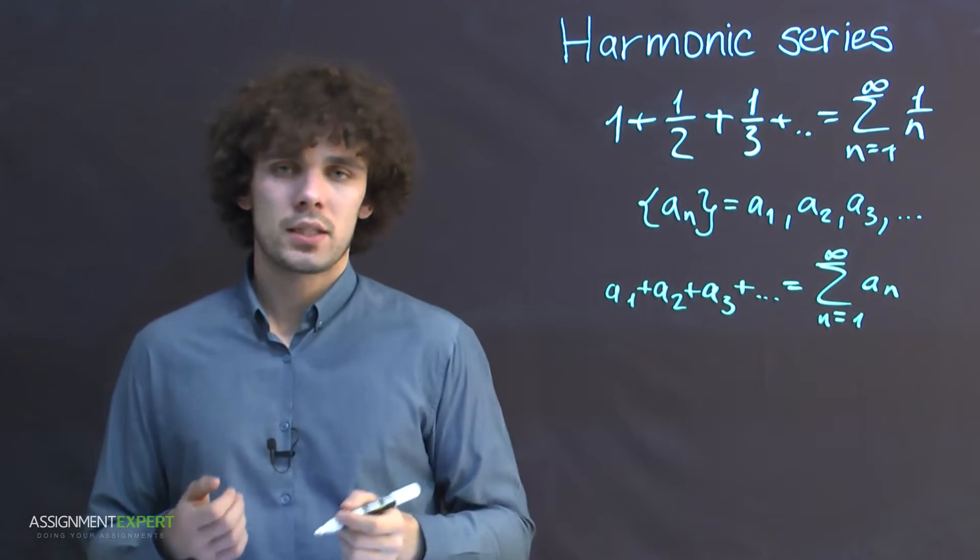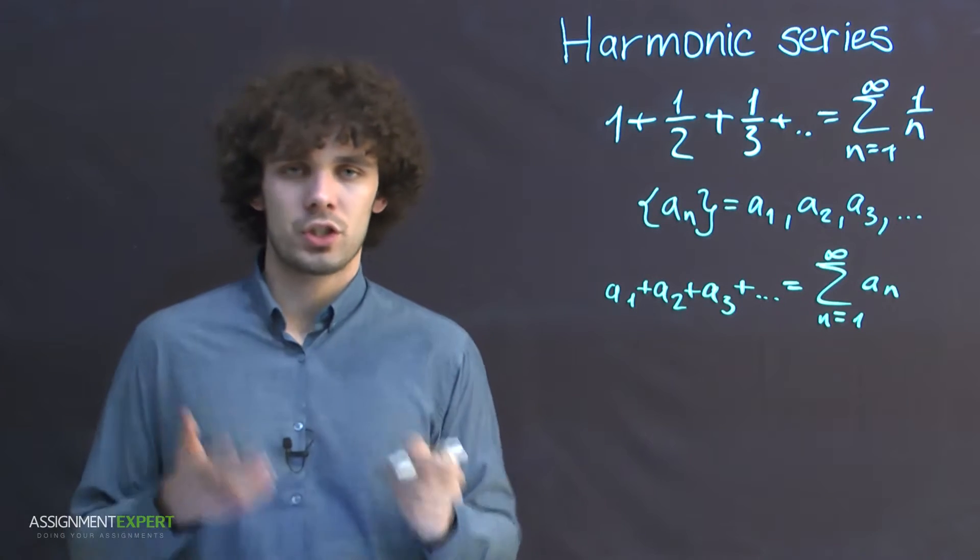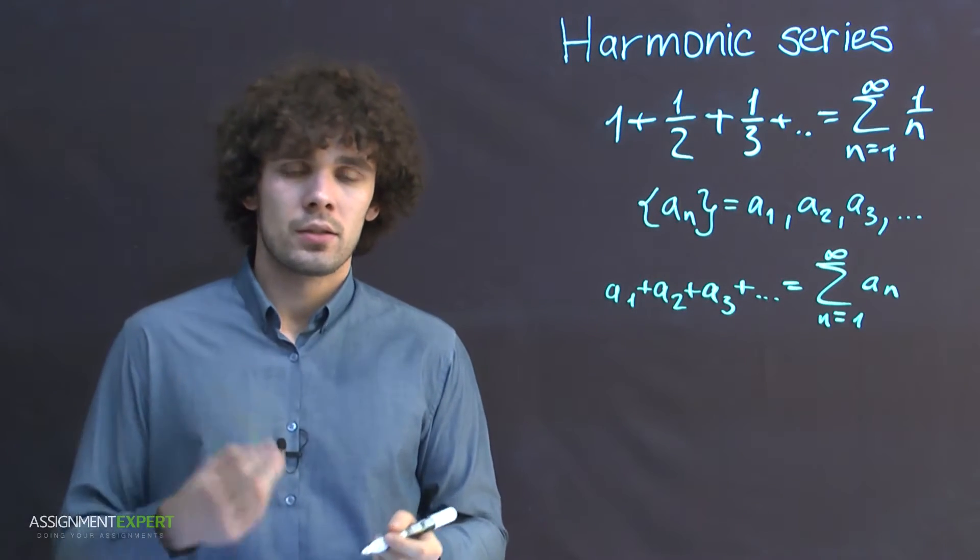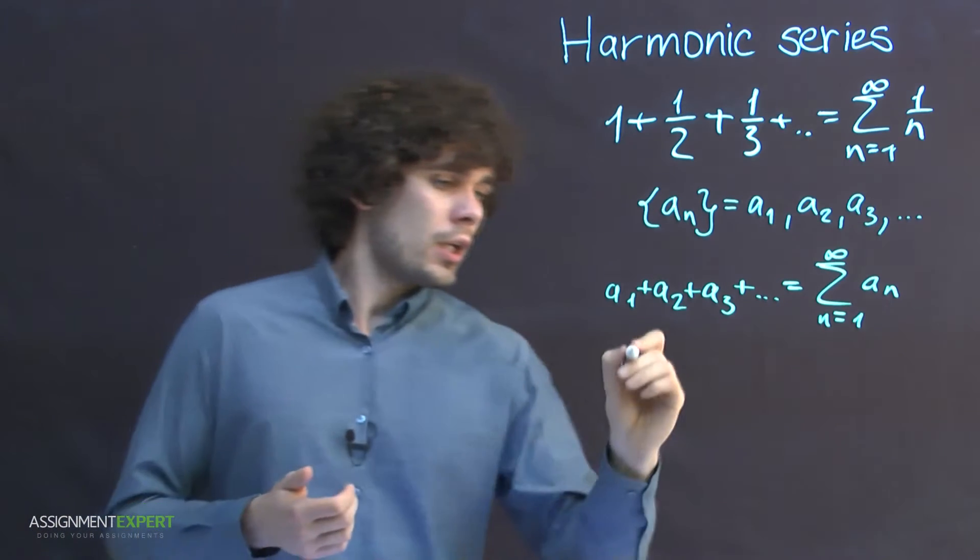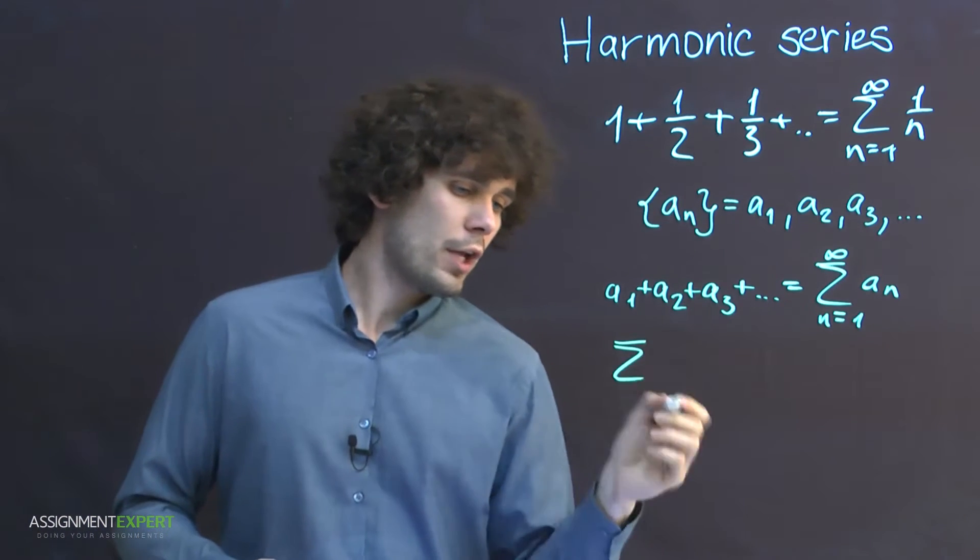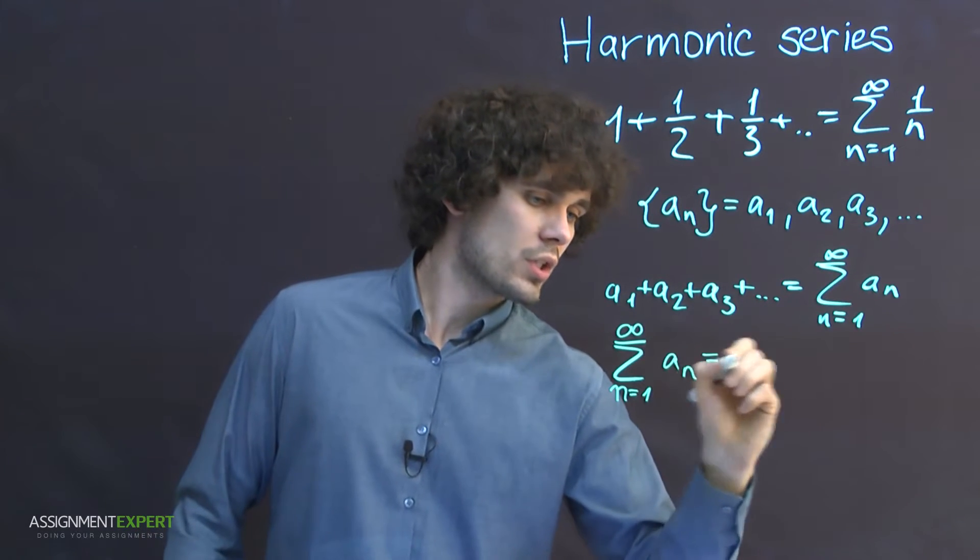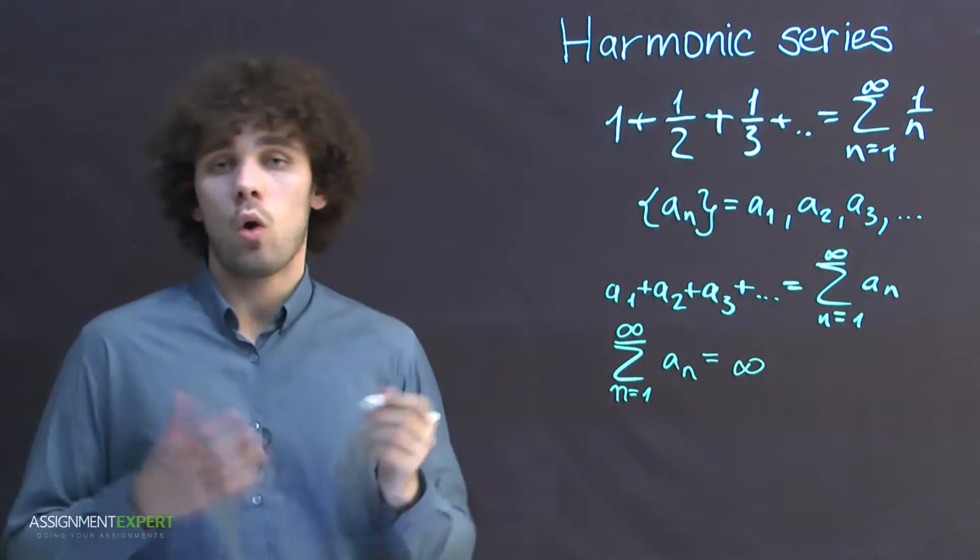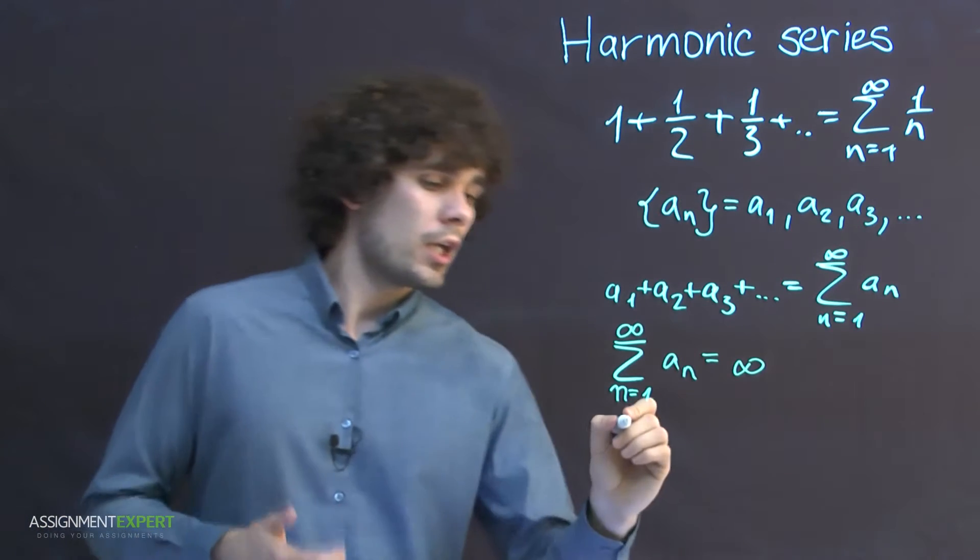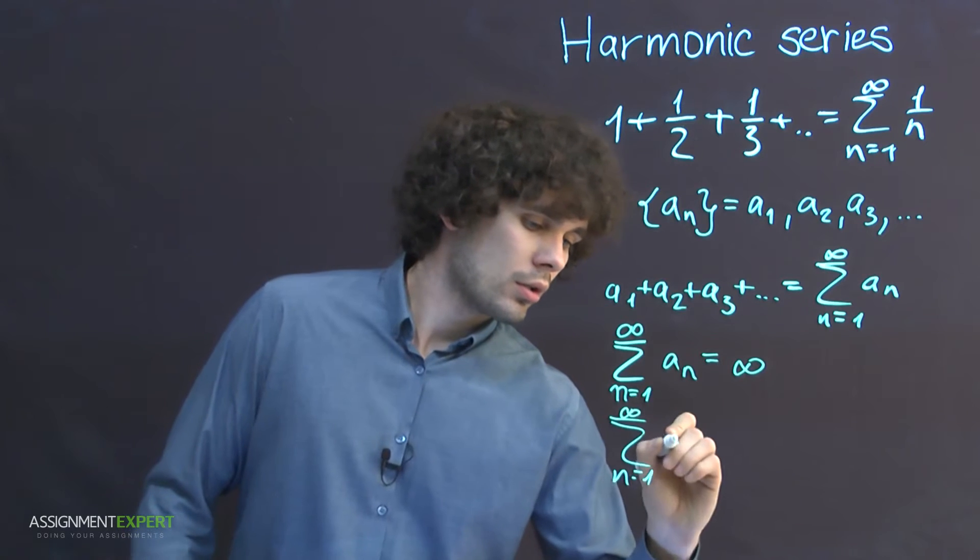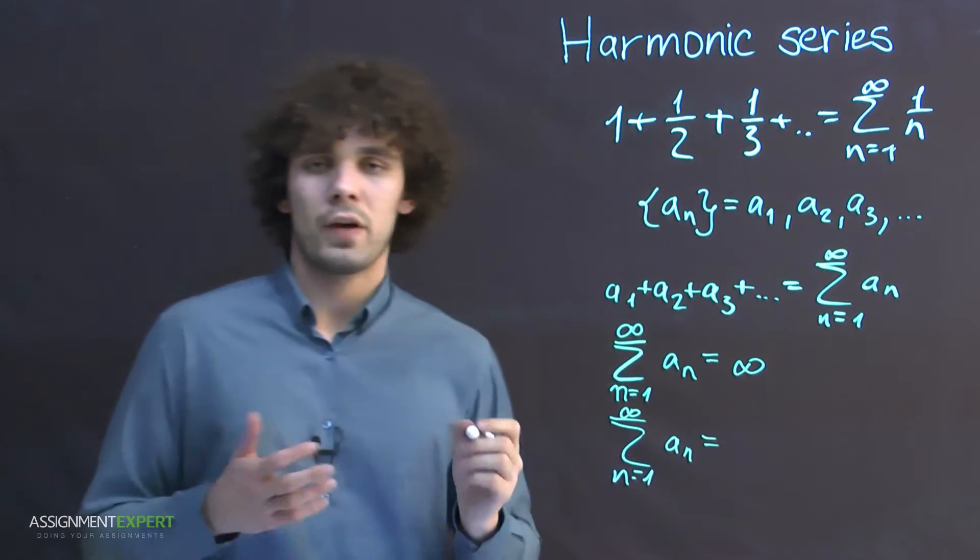One of the key tasks of the theory of numerical series is to reach convergence. There are two possible cases. The series diverges if the sum of infinite amount of terms equals infinity. Or the series converges if the sum of the infinite amount of terms equals a finite number.